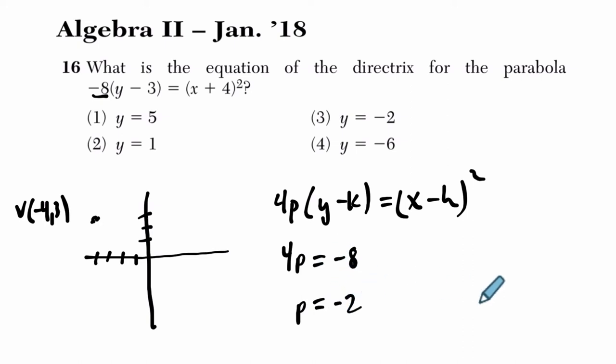Now, if p is negative, it tells me the parabola opens downward. But the absolute value of p is the distance between the vertex and both the focus and directrix. So if it's opening downward, the focus is 2 below here. So the focus is at negative 4, down 2, which is 1. So that's that distance right there. That's p right there.